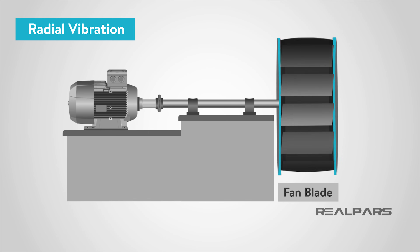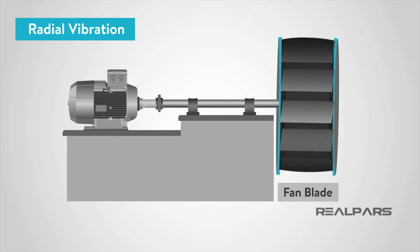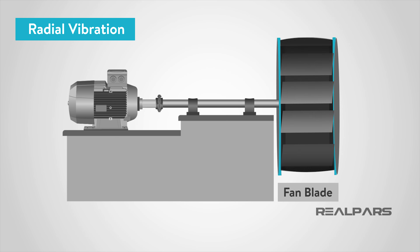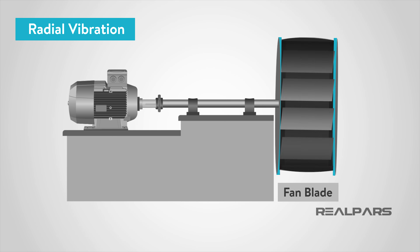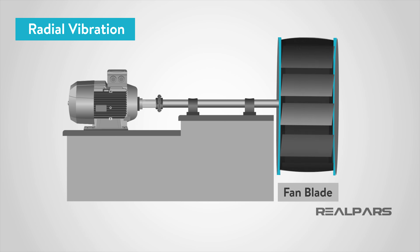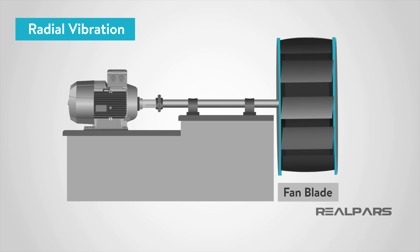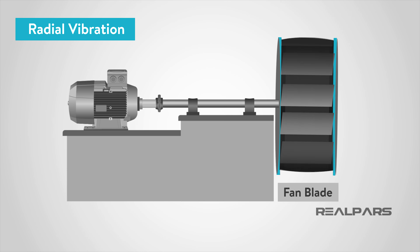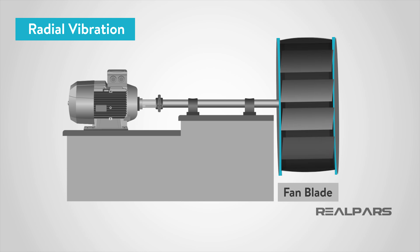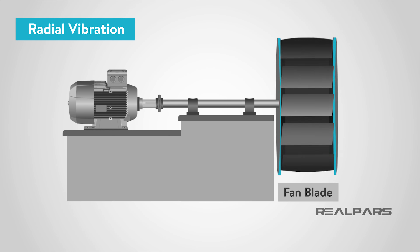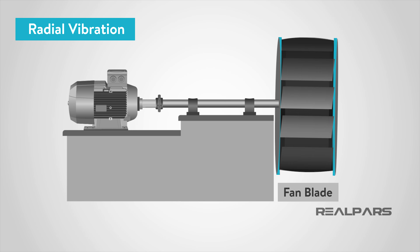Radial vibration occurs as a force applied outward from the shaft. Radial vibration would occur if there is a heavy spot in the motor as it rotates. If there is a deformed fan blade, as the fan spins, the deformed fan blade would pull outwardly on the shaft of the motor causing radial vibration.